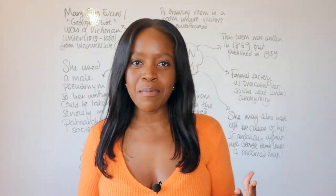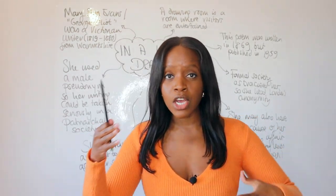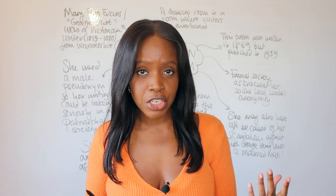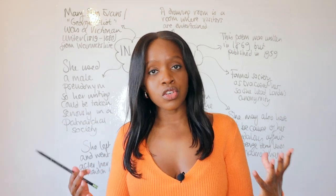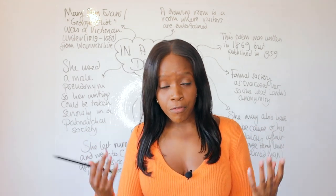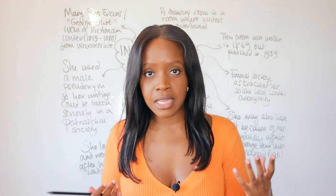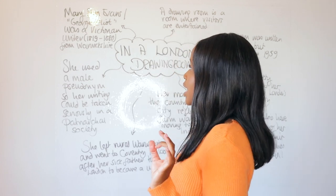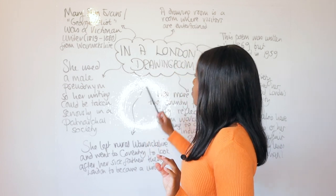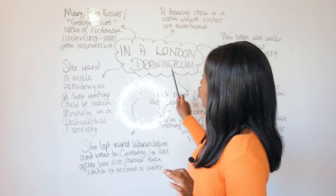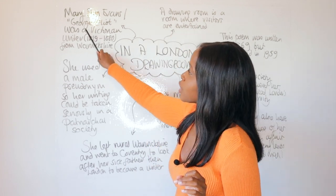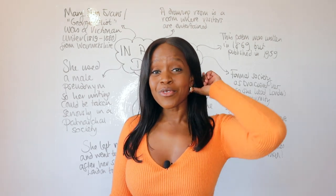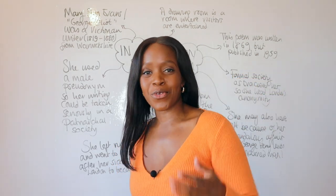I've created a mind map containing all the contextual information you need to understand before studying this poem. Now, remember that 'In a London Drawing Room' is written by George Eliot — however, that's not the real name of the author. The author isn't actually a man, even if the name sounds manly.